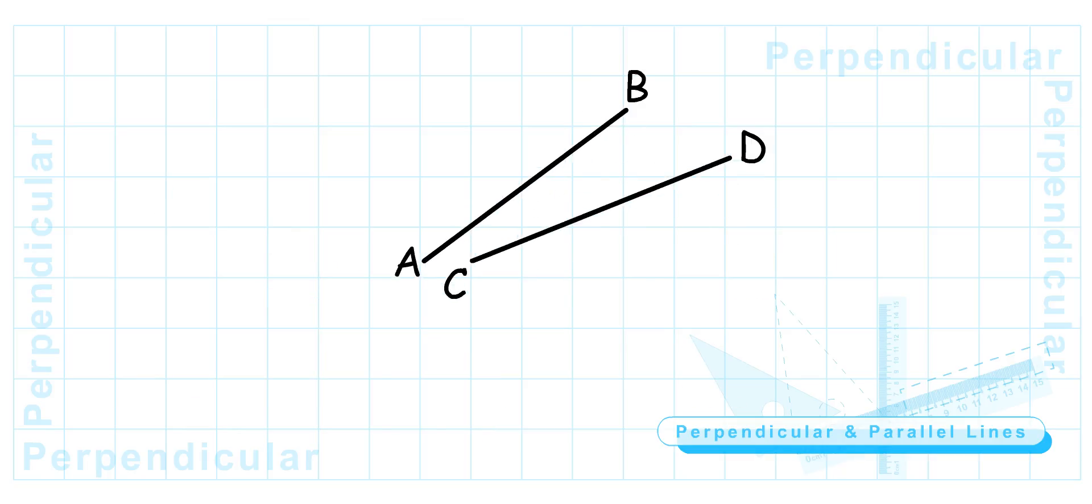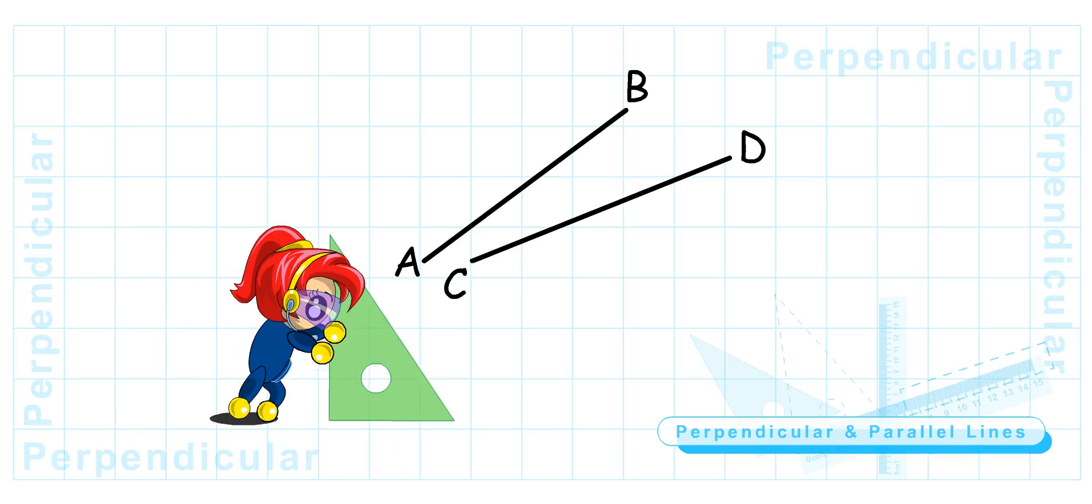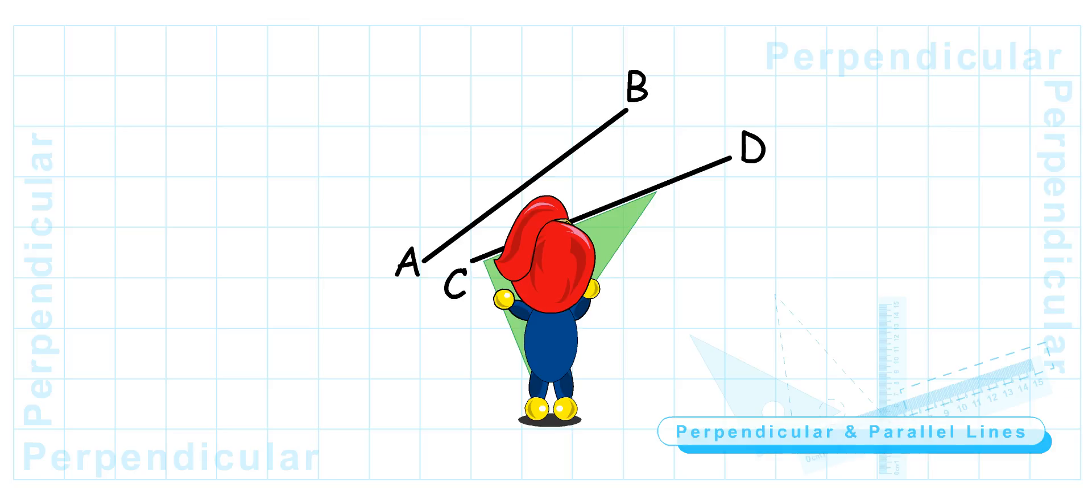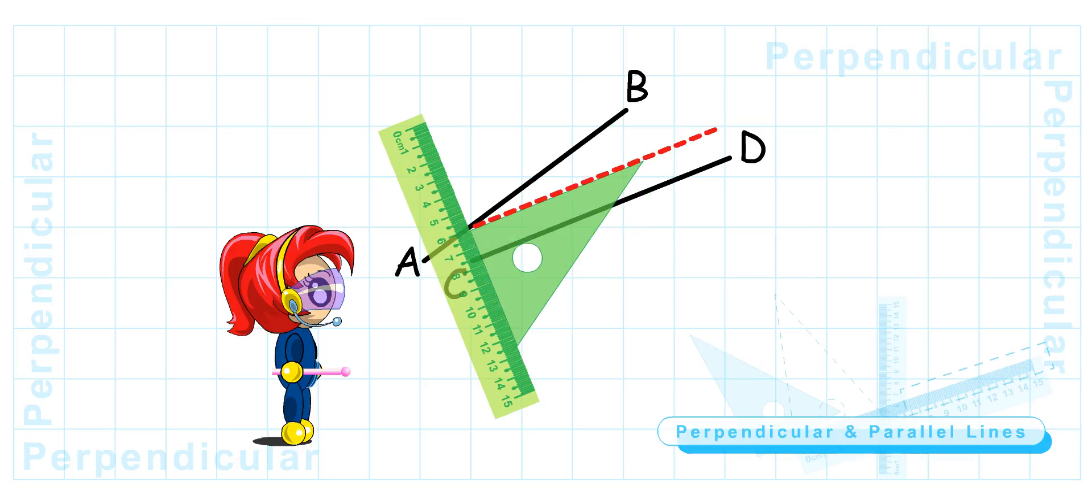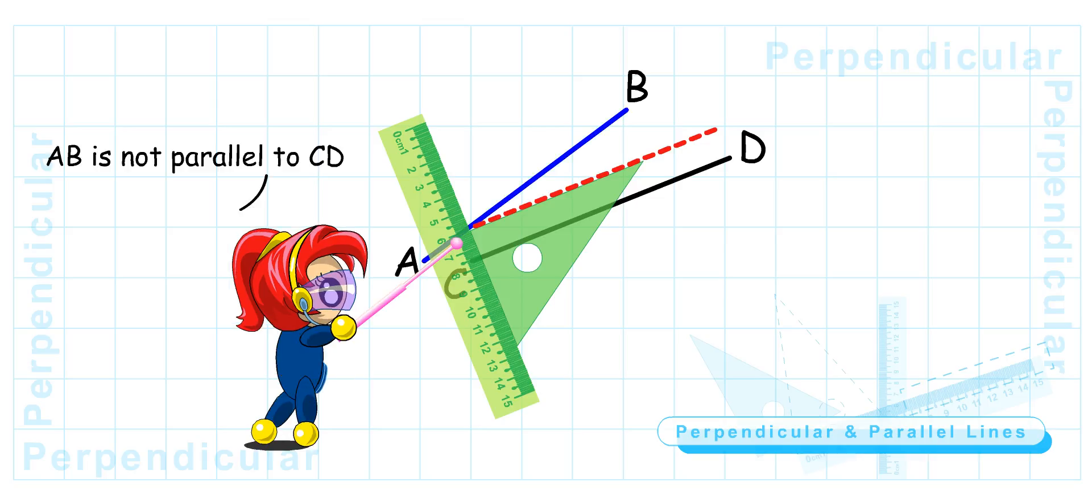You try checking this pair of lines to see if they are parallel lines. First, I place my set square onto line CD. Then, place my ruler at the side of the set square, and I slide the set square towards line AB. So, what can you say about these lines? Well, AB is not parallel to CD. Good job, Turbo Girl.